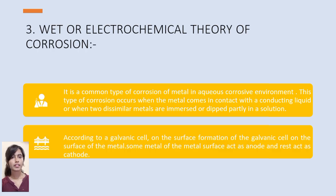Wet or electrochemical theory of corrosion. This is a common type of corrosion of metal in an aqueous corrosive environment. This type of corrosion occurs when the metal comes in contact with a conducting liquid, or when two dissimilar metals are immersed or dipped partly in the solution. According to this theory, a galvanic cell forms on the surface of the metal — some areas of the metal surface act as the anode and the rest act as the cathode.